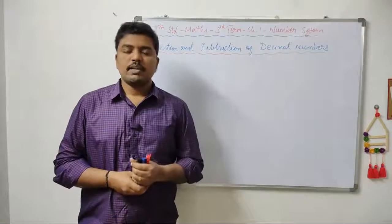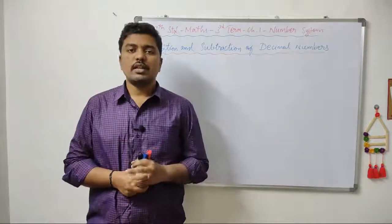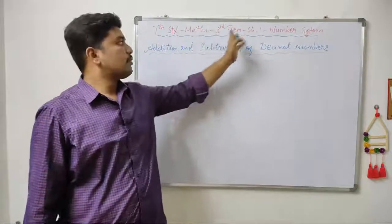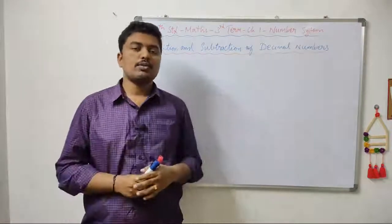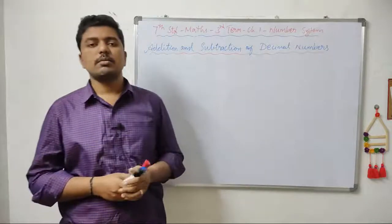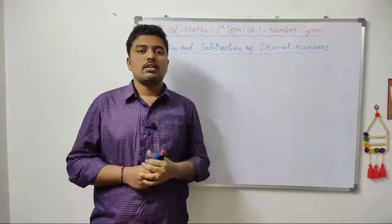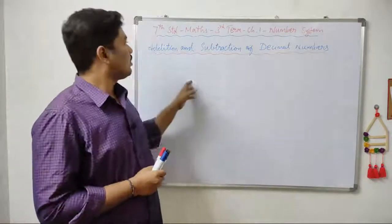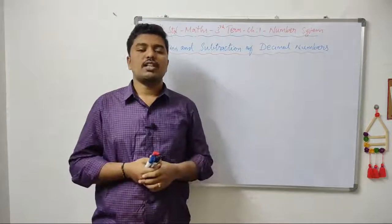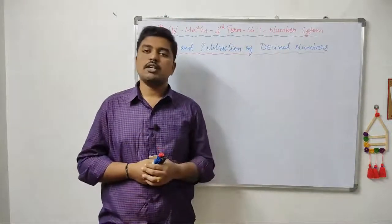Hello, students and parents and my dear friends. In this class, we will go to the SathisKumai Education Channel. We will go to the 7th Standard Maths, Chapter 1, Number System. Addition and subtraction of decimal numbers using grid model. We will go to the square grid and add decimal numbers and subtract.